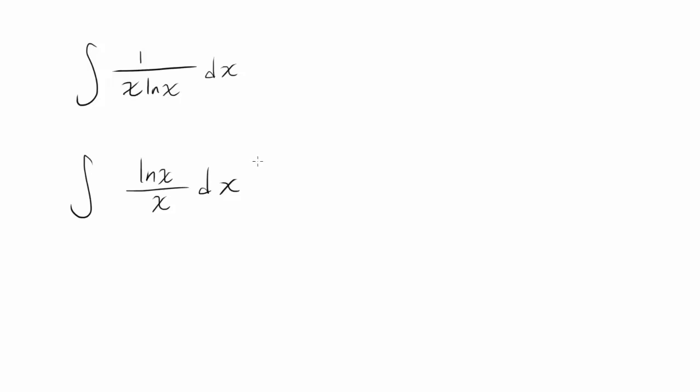We want to select our u such that our u prime can be found or can be formulated using constant multiple of what's left over in the expression. And I see 1 over x which is derivative of natural log of x. So why don't we let u be natural log of x. So let's let u be natural log of x.